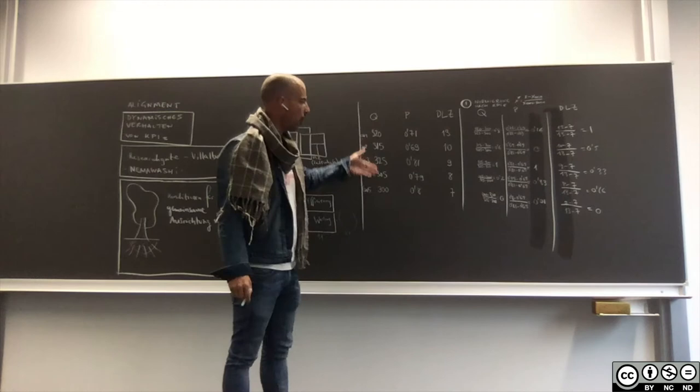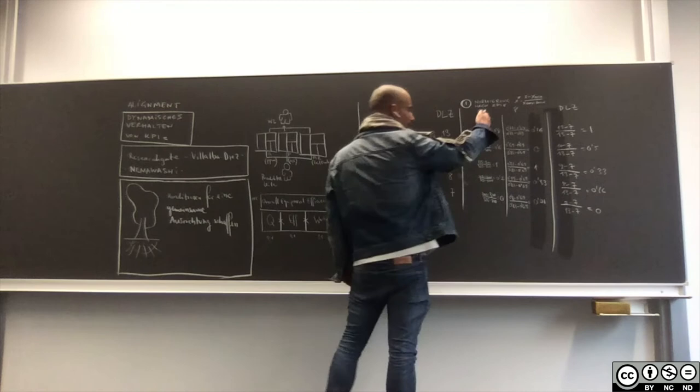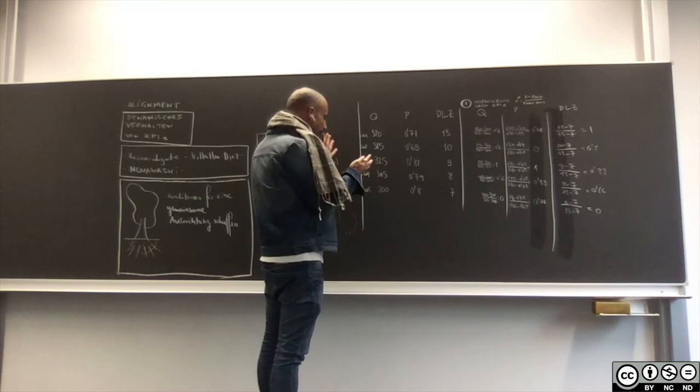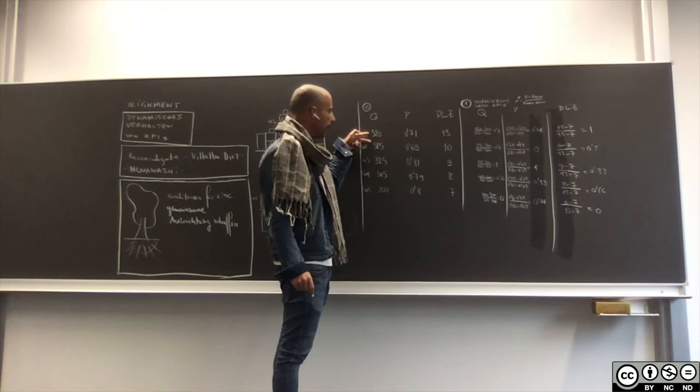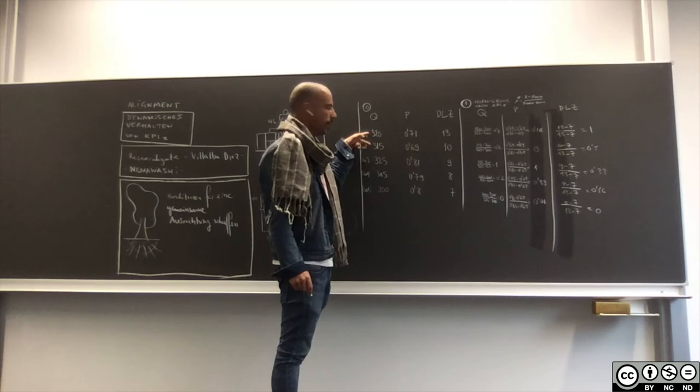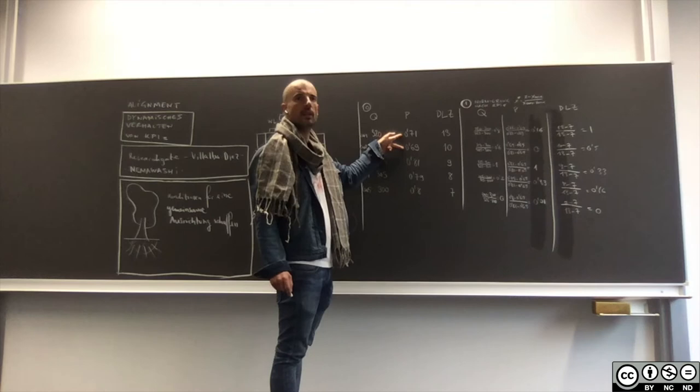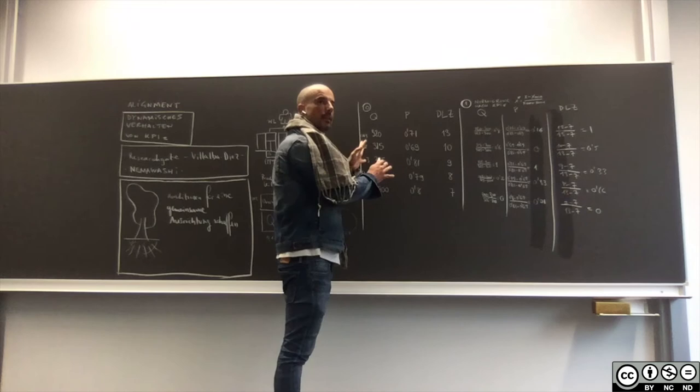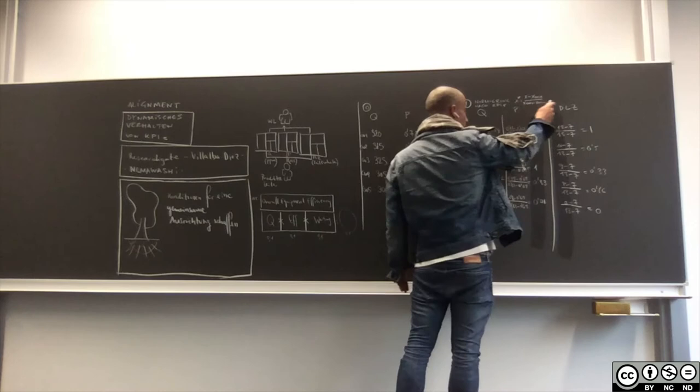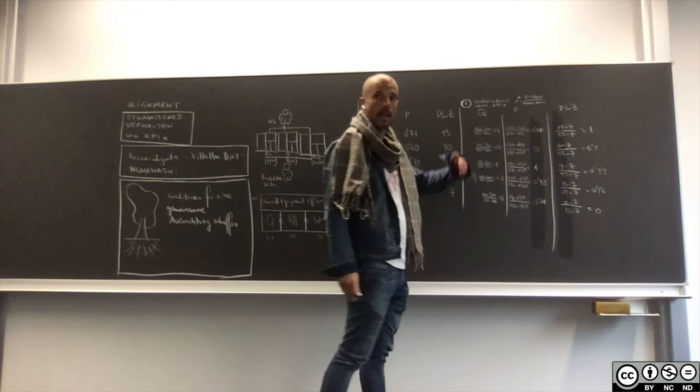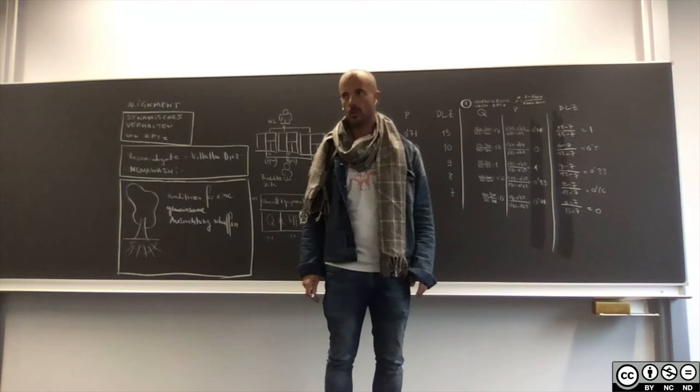Warum machen wir diese Normierung? Das ist wichtig, damit wir nachher diese Daten zueinander vergleichen können. Wir können in dieser Originalform diese Daten zueinander nicht vergleichen, weil eine Änderung von einer Einheit in der Qualität in PPM bedeutet ganz wenig, aber eine Änderung von einer Einheit in der Produktivität bedeutet sehr viel. Deshalb machen wir die Normierung zwischen 0 und 1. Und jetzt haben wir alle Daten, Qualität, Produktivität und Durchlaufzeit zwischen 0 und 1. Und das ist wichtig für den nächsten Schritt, damit wir sie vergleichen können in der Zeit.